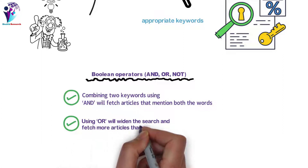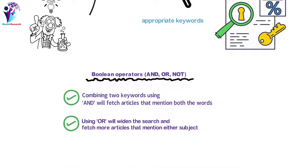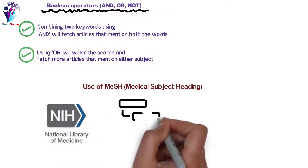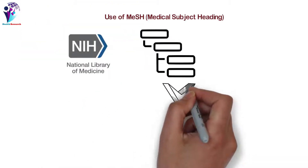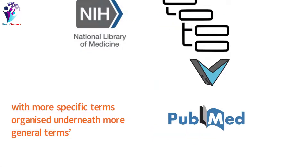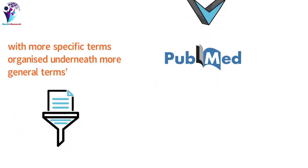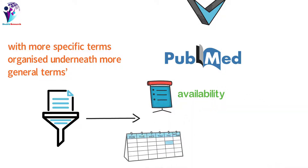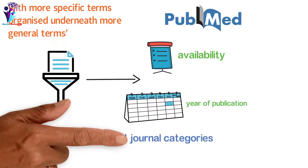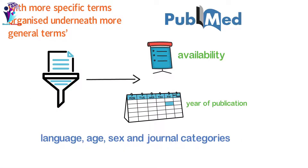Using 'OR' will widen the search and fetch more articles that mention either subject. Use of Medical Subject Headings (MeSH) is the National Library of Medicine's controlled hierarchical vocabulary used for indexing articles in PubMed, with more specific terms organized underneath more general terms. Filters can also be used to refine the search — for example, article types, text availability, year of publication, language, age, sex, and journal categories.